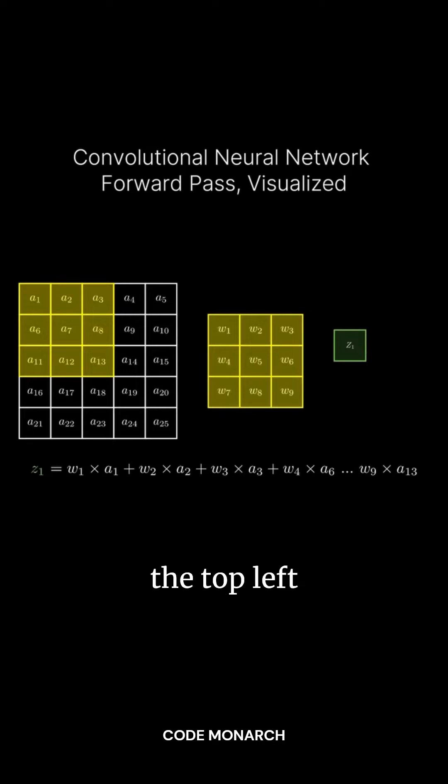In forward propagation, we begin in the top left corner of the input layer. We multiply the kernel's weights with the corresponding values in the input.